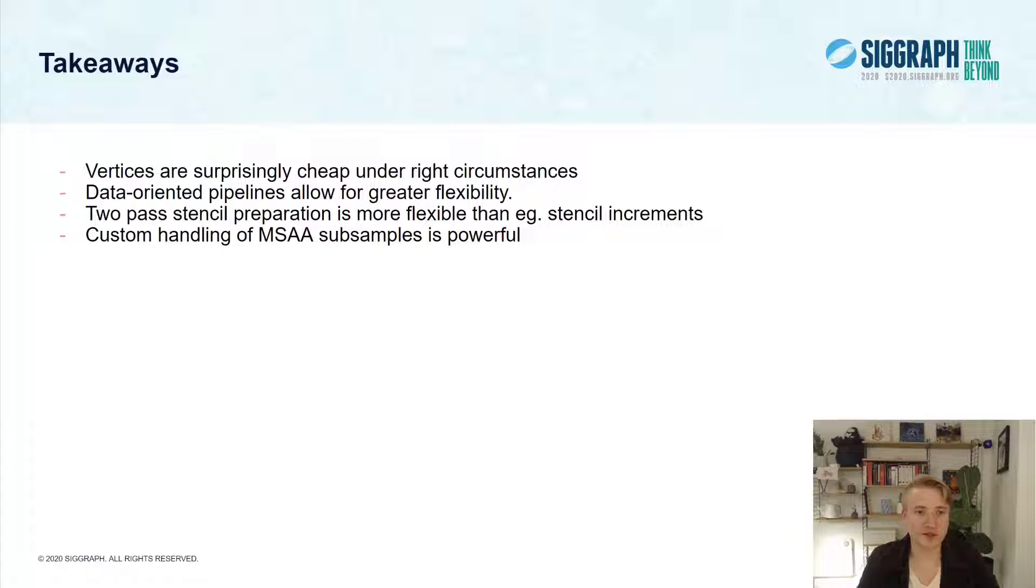So what are some of the takeaways from this talk? One is that vertices are actually surprisingly cheap in the circumstances, and you can get away with a lot, as long as you make sure that you aren't killed by tiny sub-pixel triangles that cause a lot of spurious overdraw. Second is that having a data-oriented pipeline can allow for much greater flexibility and is not just an engineering note. Thirdly, a two-pass stencil preparation approach can be more flexible than trying to use stencil increments or some of these more traditional techniques, and this cost of an actual rendering pass is mostly negligible. And lastly, handling MSAA subsamples in a custom fashion can be really powerful to render anti-aliasing with MSAA enabled for different types of effects.